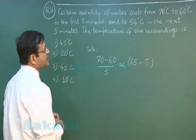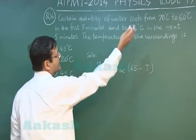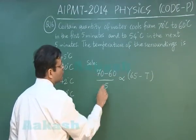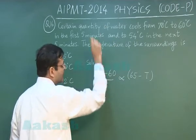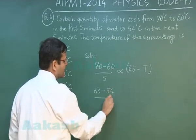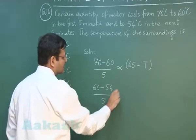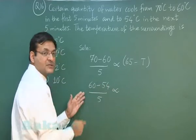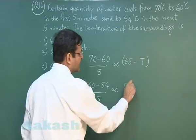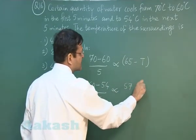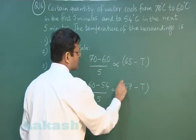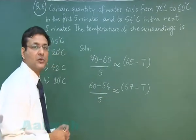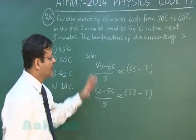For the second equation, the water cools from 60°C to 54°C in another 5 minutes. So 60 minus 54 over 5 minutes is proportional to the average of these two, which is 57°C, minus T. These are the two equations based on Newton's law of cooling.